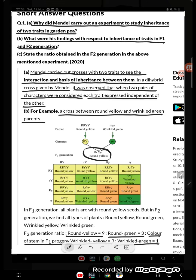So this is the ratio: 9:3:3:1. In F1 generation, all plants are round yellow seeds. But in F2 generation, we find all types of plants: round yellow, round green,